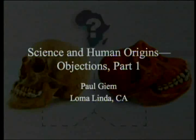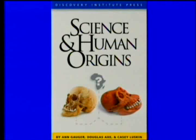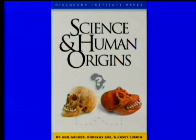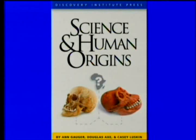Science in Human Origins, Objections, Part 1. We've been going through the book Science in Human Origins by Gauger, Axe, and Luskin, published by the Discovery Institute Press. We've gone through all the chapters and what they have to say, and now we're going to broaden our view to look at what other people have to say about them.